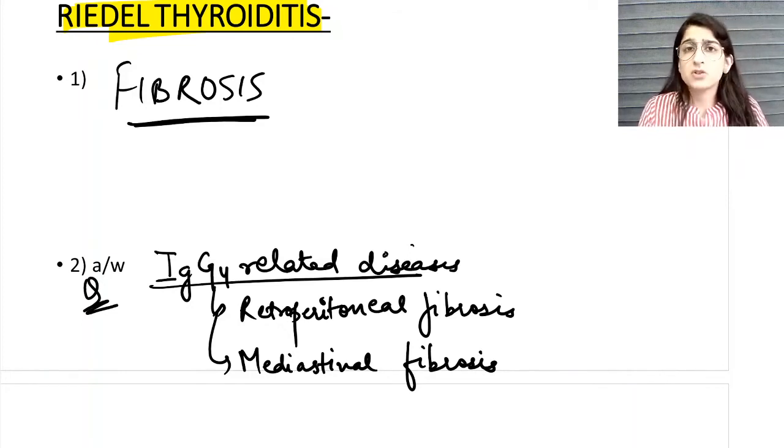deal in detail when we talk about the immunology chapter. But for now, just understand that Riedel's thyroiditis is associated with IgG4-related diseases, which includes retroperitoneal fibrosis and mediastinal fibrosis.